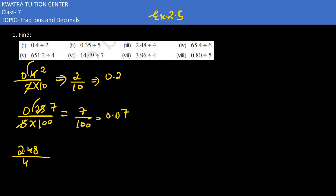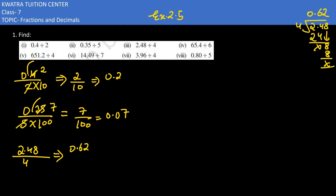We can do decimal remove, or use the direct division method. We have 2.48 divided by 4. In 4, we can't take 2, so check for 24 — it gives 6. So 0.6 is placed because we're already using the decimal place here. 24 minus 24 is 0. For 8, 4 times 2 is 8, so the value we get is 0.62.